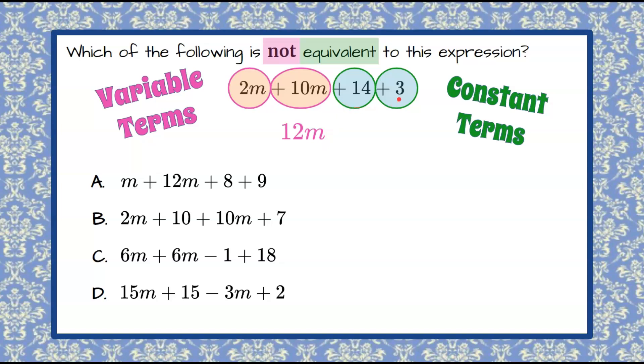Then we have 14 plus 3. You can think of it as money. You have $14. Your mom gives you $3. You now have $17.